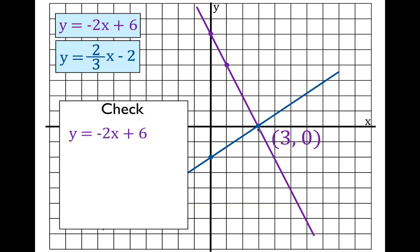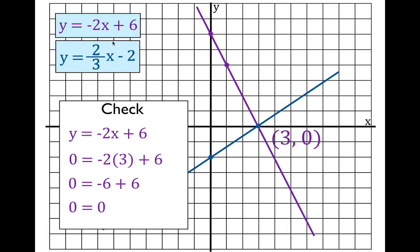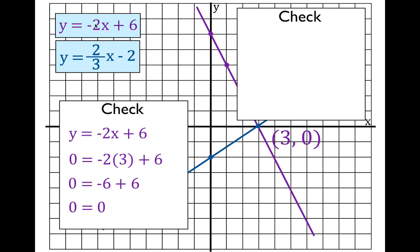We check the first equation by substituting our x and y values in. We get zero equals minus two times three plus six, so zero equals minus six plus six, and we get zero equals zero. Now we know that this point lies on this line and is a solution to this equation.